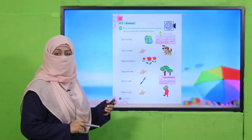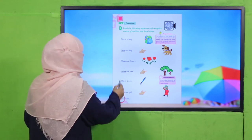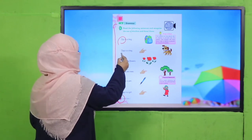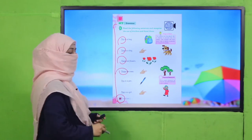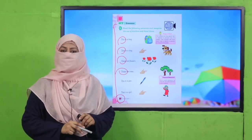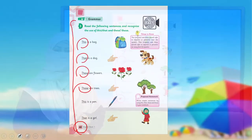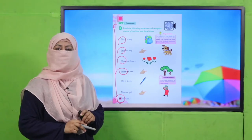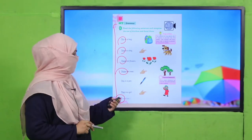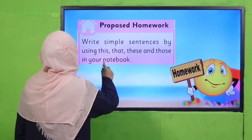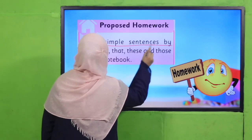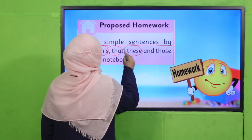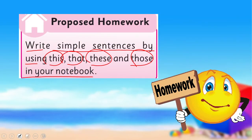Now let's practice from your book. Open your book on page 88 and read how we use this, that, these, and those — practice saying them. Then come back. Good job! It's time for your homework: write simple sentences using 'this,' 'that,' 'these,' and 'those' in your notebook.